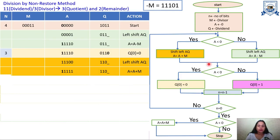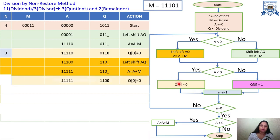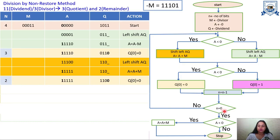We check A again — the MSB is 1, so A is still less than 0. We place 0 at position Q0. N is decremented: N = 3 − 1 = 2. Since N ≠ 0, we loop back again. The MSB check confirms A is still negative, so we take the A < 0 branch again and shift left AQ.